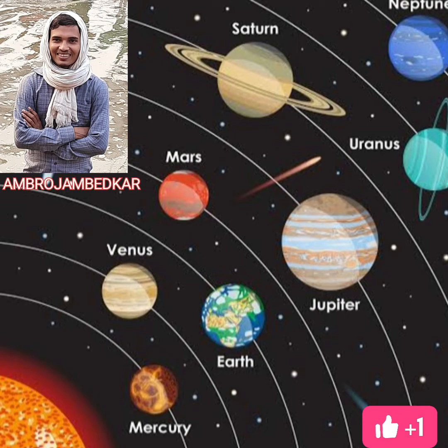The sun travels with the planets through millions of stars in our galaxy at a speed of about 70,000 kilometers per hour. The sun is about 150 million kilometers away from the Earth, and light takes about 8.5 minutes to reach the Earth from the sun.